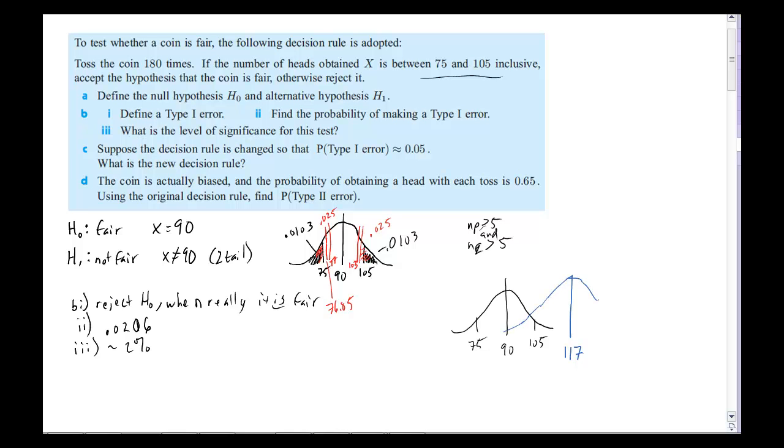So, then we're going to go like this. Okay, so this is where it really is. So, a type 2 error is that I accept the hypothesis. So, that means that we say that it's fair when it's really not. So, we say it's fair, really, it's not. Okay, now we would say it's fair if it's anywhere between 75 and 105.